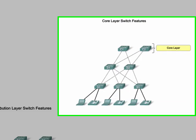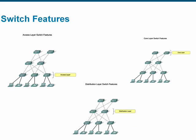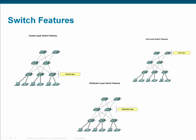Core layer switches should include 1 gigabit per second or even 10 gigabit per second links to accommodate the large volume of traffic that will traverse the network backbone. Layer 3 support, redundant components, link aggregation capability, and very high forwarding rates should also be implemented at the network's core.